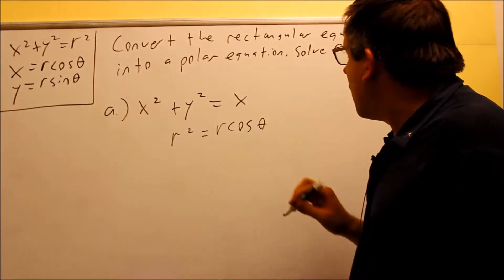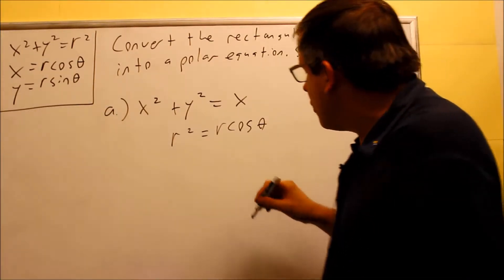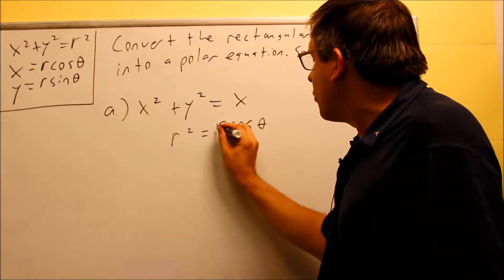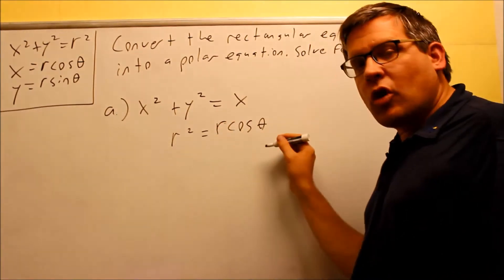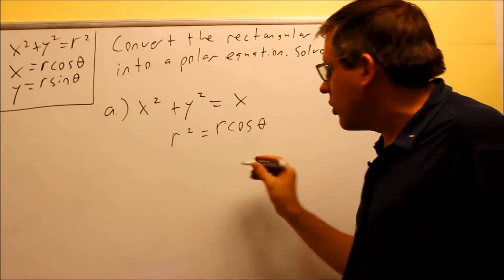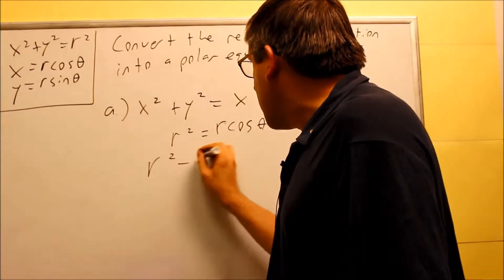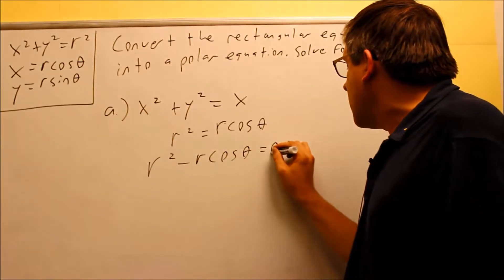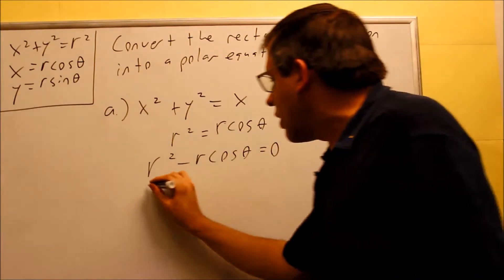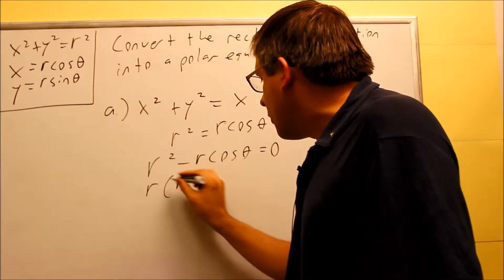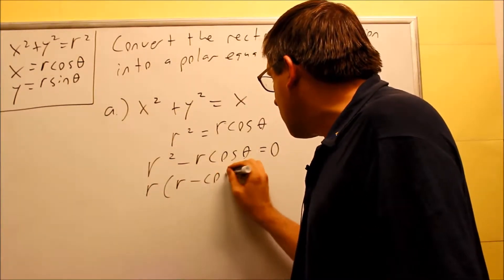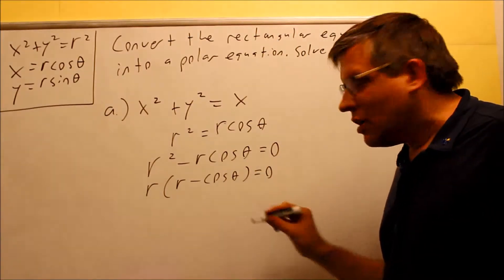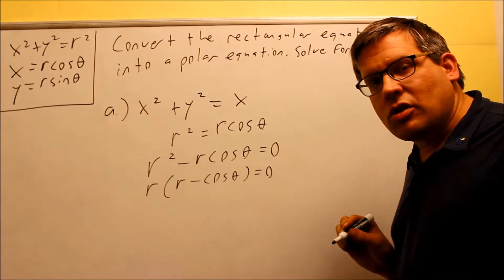Now to solve for r, we set the equation equal to zero by bringing r cosine theta across the equal sign. We get r squared minus r cosine theta equals zero. From there we can factor out an r, giving us r times the quantity r minus cosine theta equals zero. Whenever you have something set equal to zero, it's good to factor and then set both factors equal to zero.